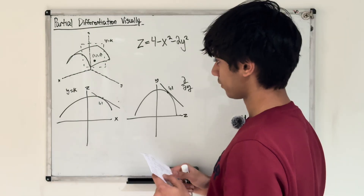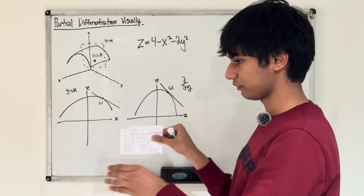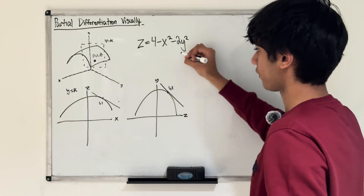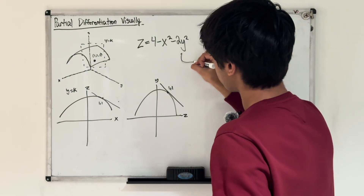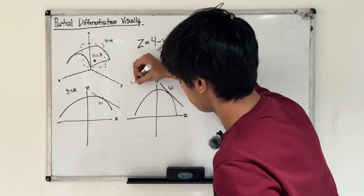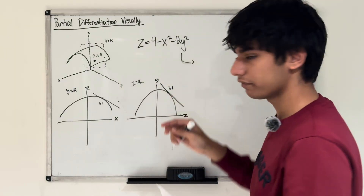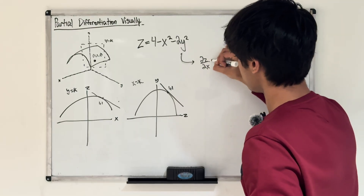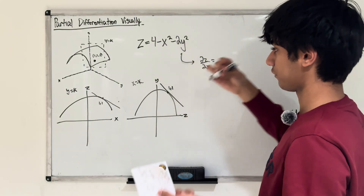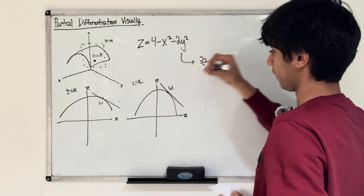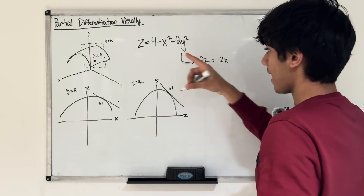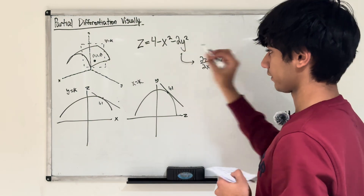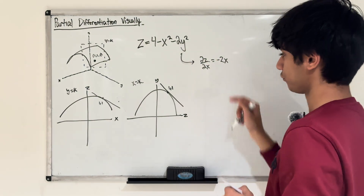The main concept is that we're taking slices and finding the derivative along that direction. Looking back at our function, how do we actually compute it? We take the variable we're not differentiating to be constant. So for the partial of z with respect to x: the derivative of 4 is 0, negative x squared gives negative 2x, and negative 2y squared — since y is a constant — that whole term is a constant, so it's 0. That's our first partial derivative.